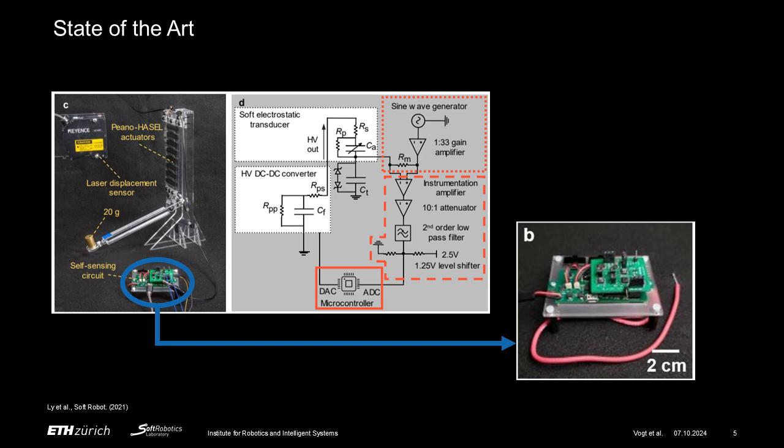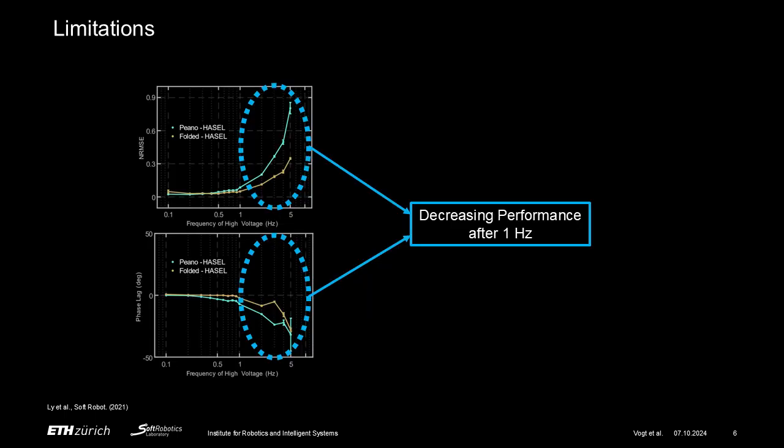The current state-of-the-art is a miniaturized capacitive sensing circuitry for electrostatic transducers as proposed by Lee et al., in which superimposition and measurement of the low-voltage sensing signal occur on the low-voltage side of an electrostatic transducer. This facilitates the use of low-voltage off-the-shelf components, reducing both cost and form factor of the circuitry. However, when used with Peano HASEL actuators, this method experiences phase lag between the true displacement and the estimated displacement at actuation frequencies of 1 Hz and above, resulting in a drastic loss of sensing performance at higher frequencies.